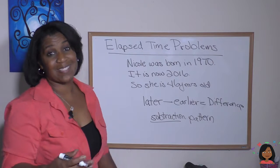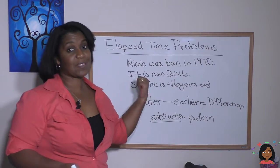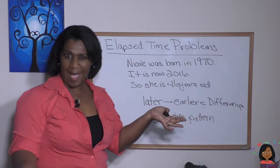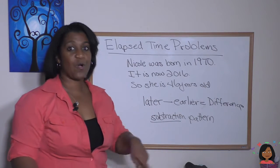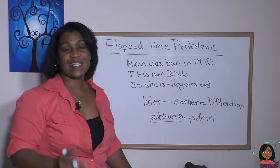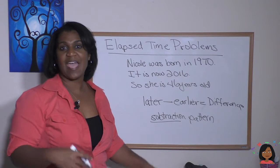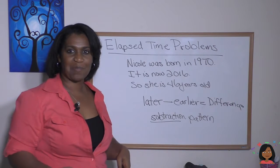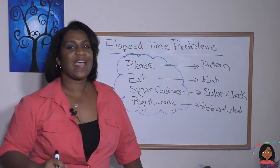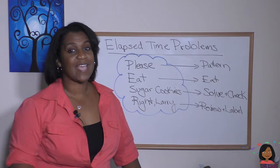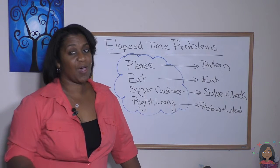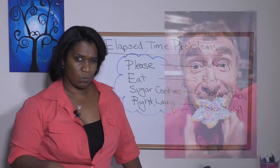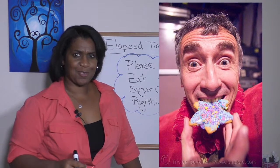Because I'm about to give you a bunch of other word problems that are elapsed time problems, and the first thing you're going to have to identify is what kind of pattern is this. Elapsed time, you know, is a subtraction pattern. Let's take a look at a couple of word problems and see if you can select out the subtraction pattern and solve the word problem. As you might know, I have a Nicolism that I use for attacking word problems. It's called Please Eat Sugar Cookies Right Larry.